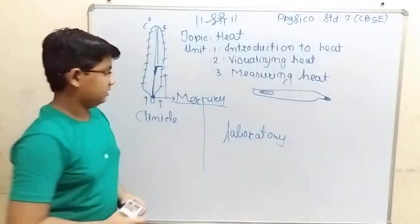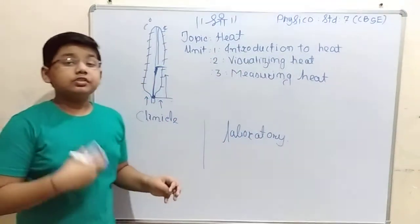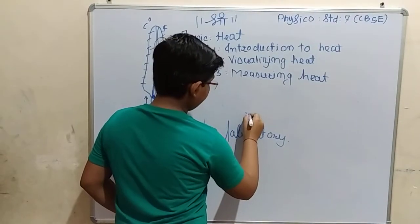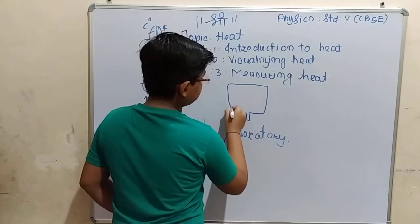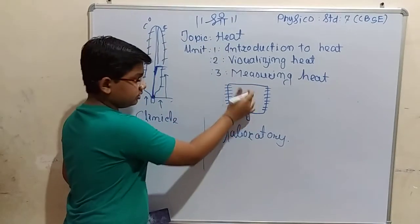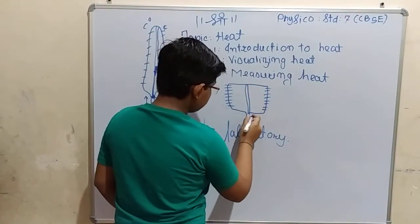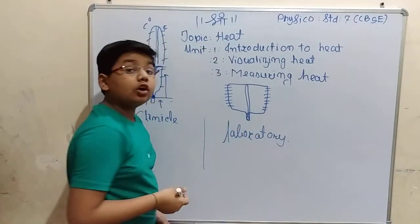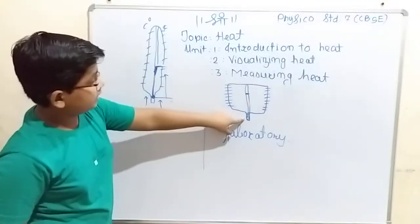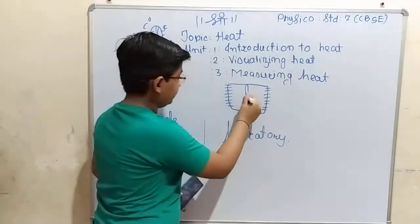Next is the laboratory thermometer. In the laboratory, the thermometer is used to measure things like the boiling point of water. The thermometer has markings on it. If you put it in a liquid, the mercury level will rise and remain at that level due to a small bend in the tube. To reset it, you must shake it so it returns to its original level, and then you can read the temperature.